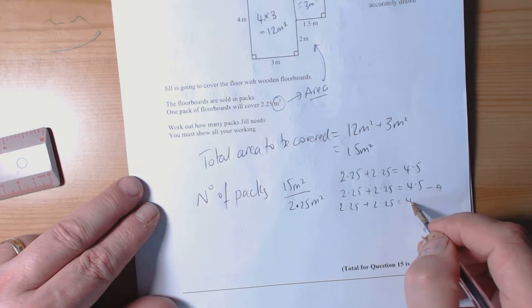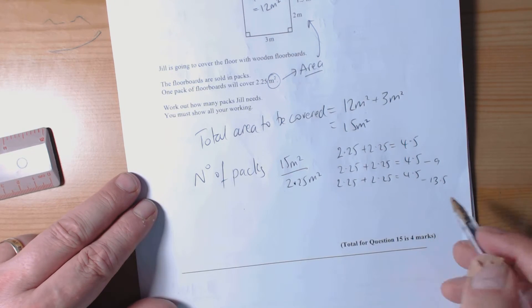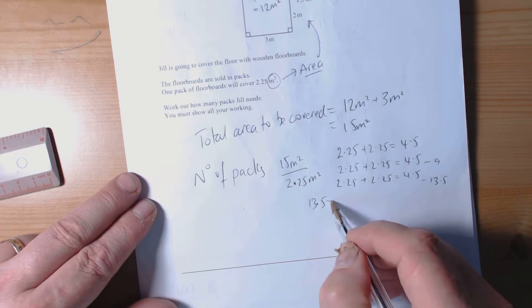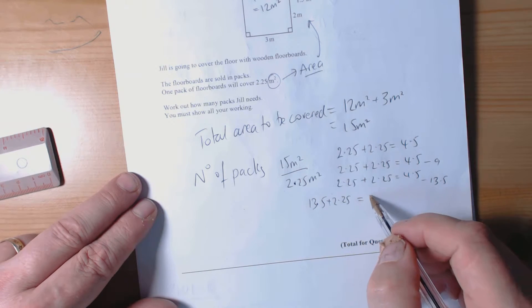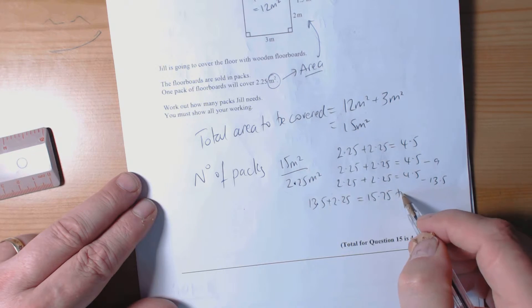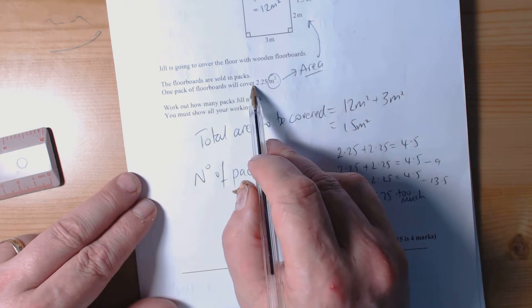So we've got 13.5 so far, and if we do 13.5 plus 2.25, then we end up with 15.75, which is too much. But you won't be able to buy short packs, so we have to work out how many packs.